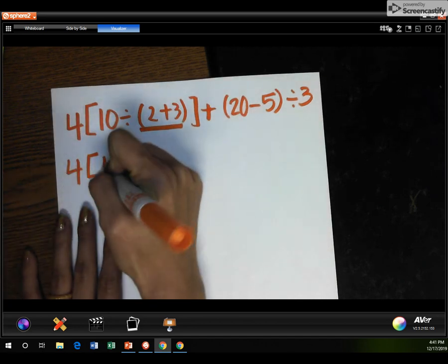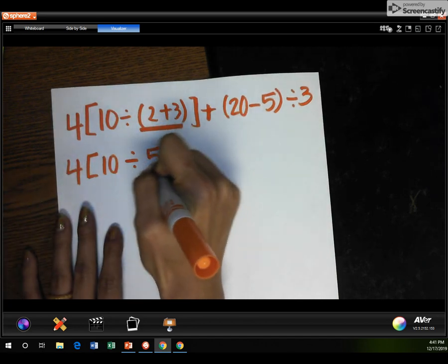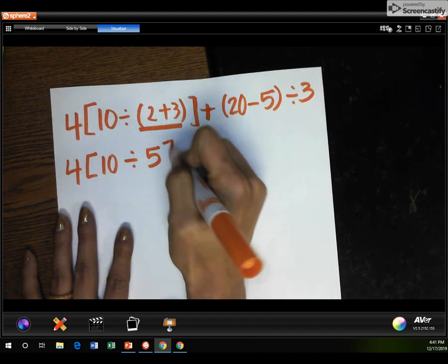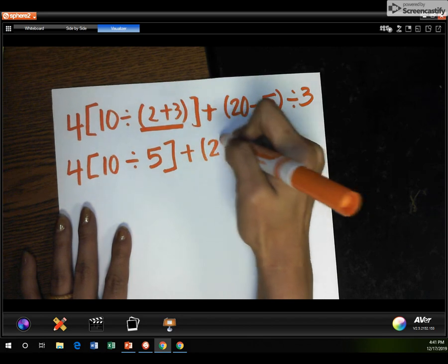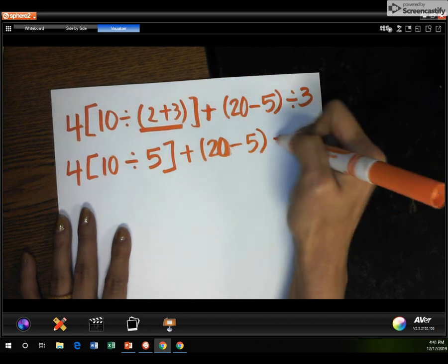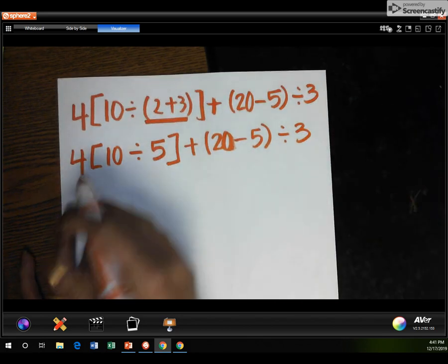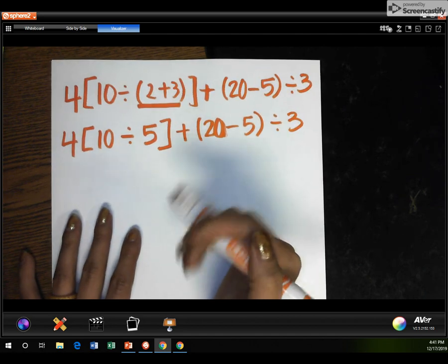So I'm gonna do 4, 10, divided by 5. I can get rid of the parentheses since I'm already done, but I cannot get rid of the bracket because I'm not done with that. But oftentimes, my friends, you guys get it wrong because you get rid of a sign or a bracket in the middle of a process. Make sure you take your time and do it as you go.